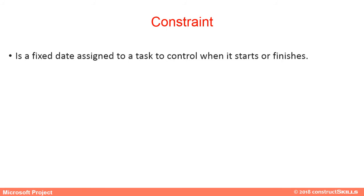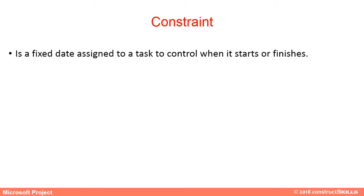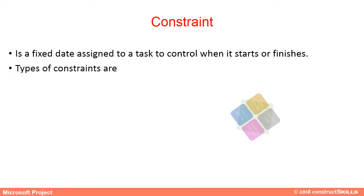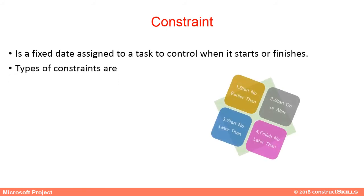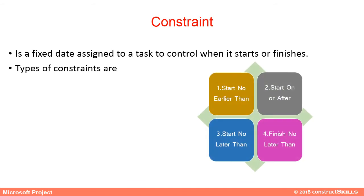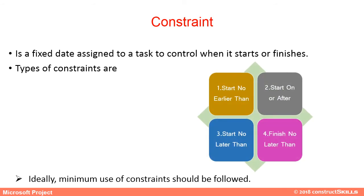A constraint is a fixed date assigned to a task to control when it starts or finishes. There are multiple types of constraints. Ideally, minimal use of constraints should be followed.